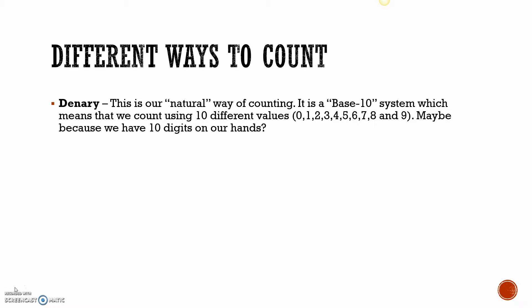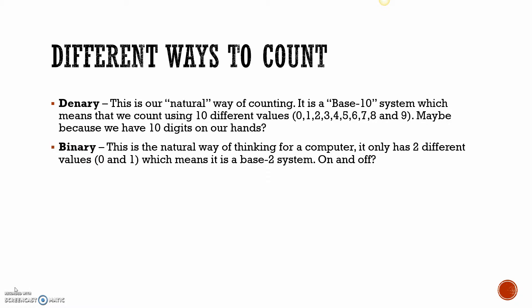Now one of the other ways you could think about it is binary. Binary is a natural way of thinking for a computer. There are only two different values: a 0 and a 1. That number 2 doesn't really exist in binary - it's just 0s and 1s. That means it is a base 2 system. Maybe because computers have electricity in them and it's just like an on and off switch.